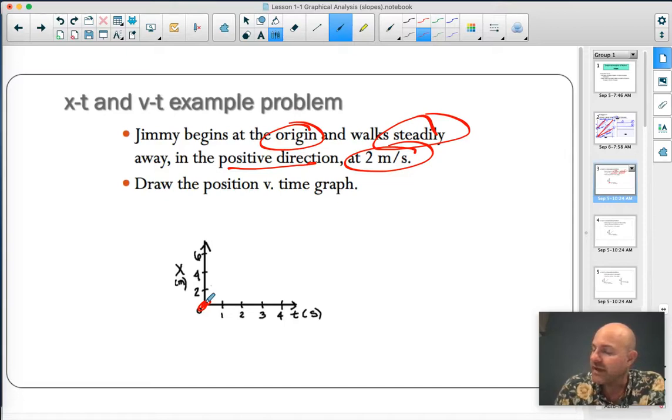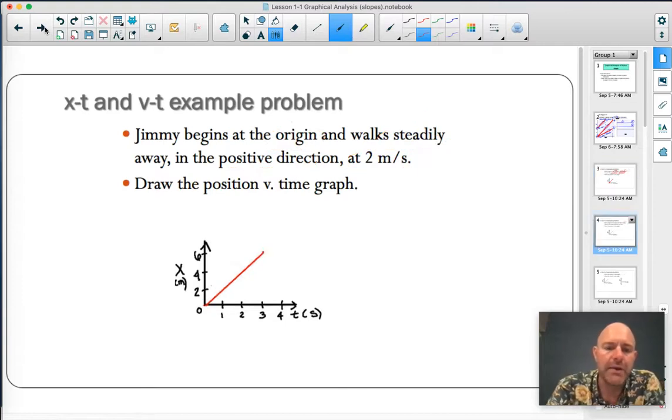Well, positive direction is information 2 meters per second. Steadily is one of those special words in physics that means the rate stays constant. If you start at the origin, that's another important piece. So, you start here. It says steadily at 2 meters per second. So, after 1 second, you've gone 2 meters. After 2, you've gone 4. After 3, you've gone 6. Something like that, right? And so, I have one already ready for us here, right? There's the position-time graph.